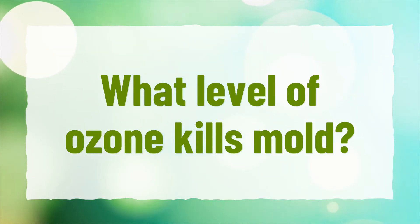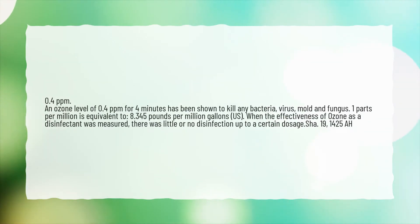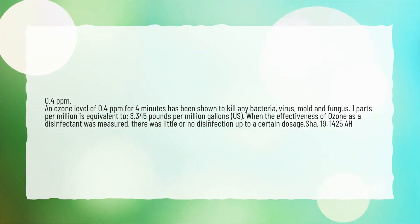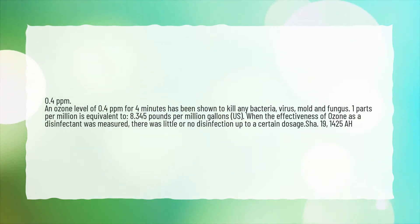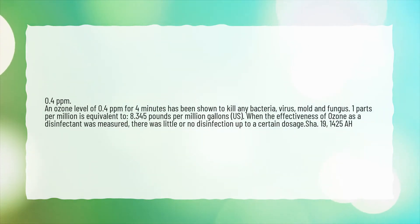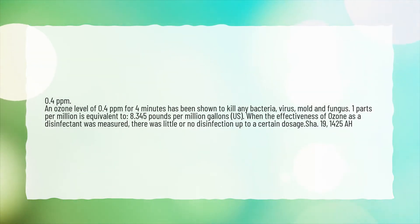What level of ozone kills mold? 0.4 ppm. An ozone level of 0.4 ppm for 4 minutes has been shown to kill any bacteria, virus, mold and fungus. 1 ppm is equivalent to 8.345 lb per million gallons, U.S. When the effectiveness of ozone as a disinfectant was measured, there was little or no disinfection up to a certain dosage.